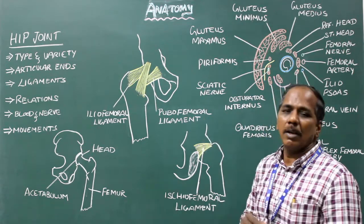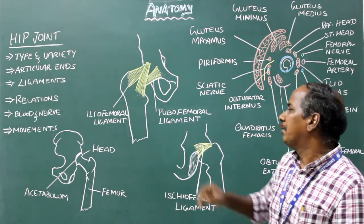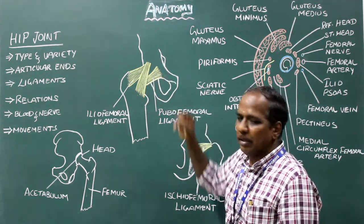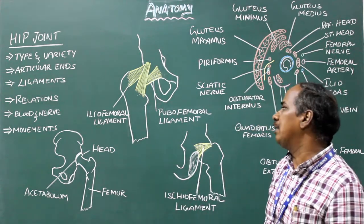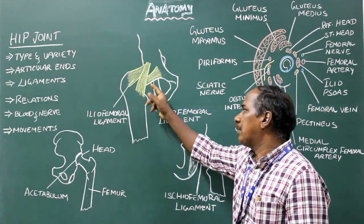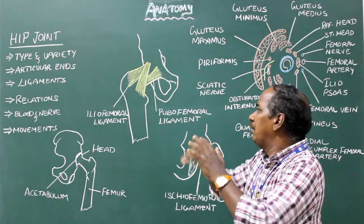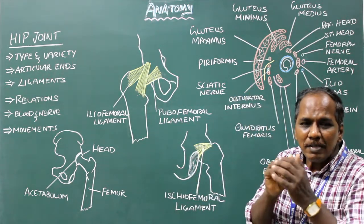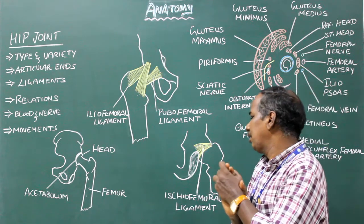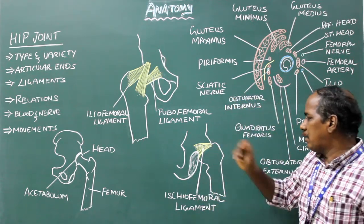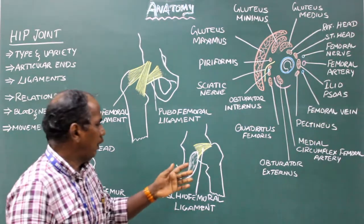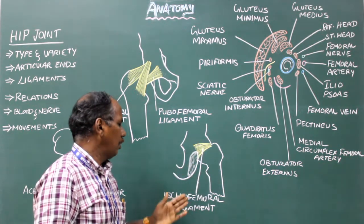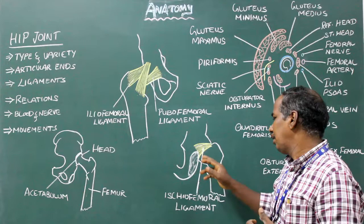Pubofemoral ligament. Proximally, it is attached to the iliopubic eminence, the superior ramus of the pubis, and the obturator crest. It is a triangular ligament — broad above and narrow below. Distally, it runs deep to the inferior band of the iliofemoral ligament, where it blends with the capsule.